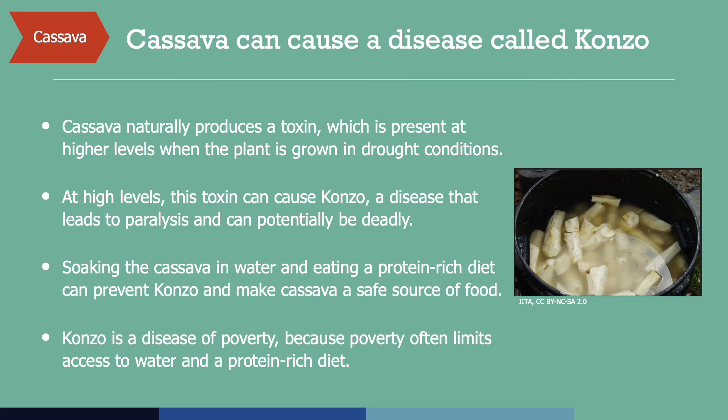In parts of Africa where konzo is prevalent, European colonialism has left behind extreme poverty. Access to water and protein-rich foods is scarce, and people who are affected by paralysis are often not able to make the trip to the nearest river or well to collect the water needed for soaking the cassava. Moreover, waiting several days to soak cassava is not possible for people who are urgently hungry. This is why konzo is considered a disease of poverty. Furthermore, konzo maintains the cycle of poverty as people with the disease lose the ability to work and collect water.